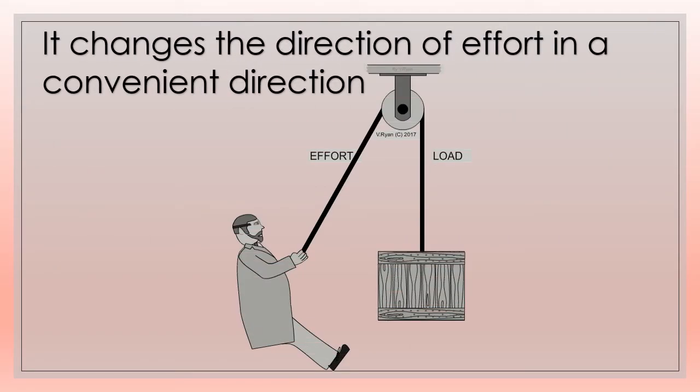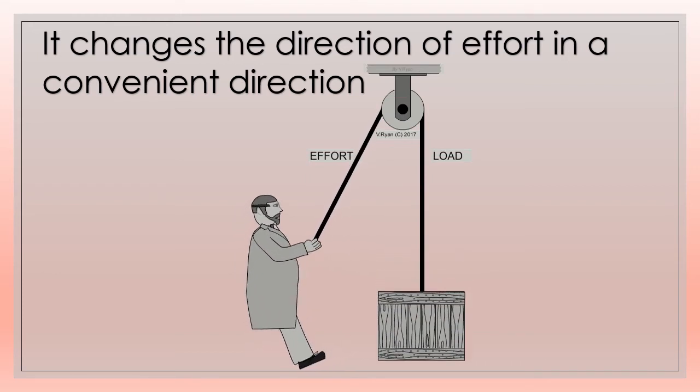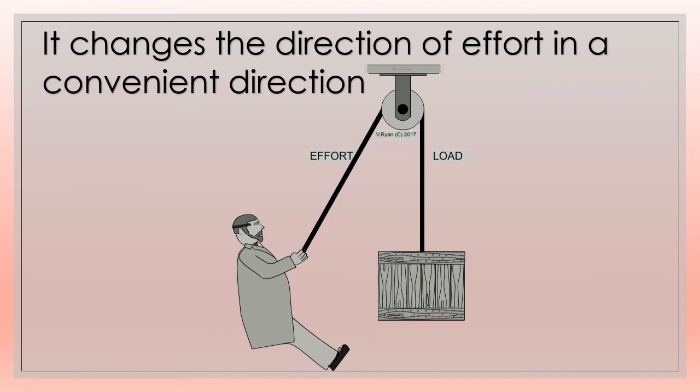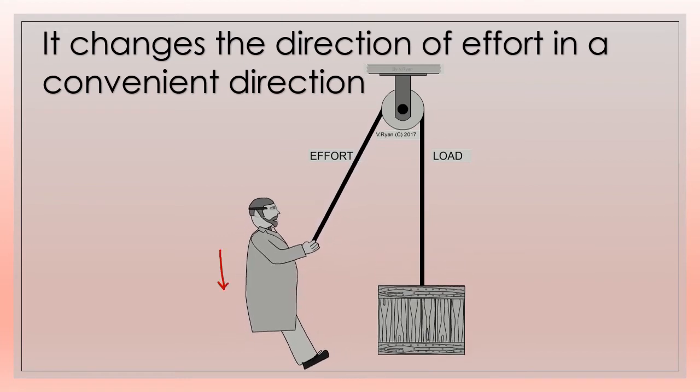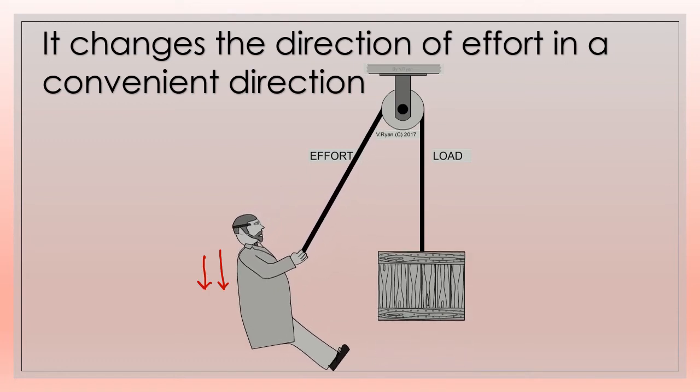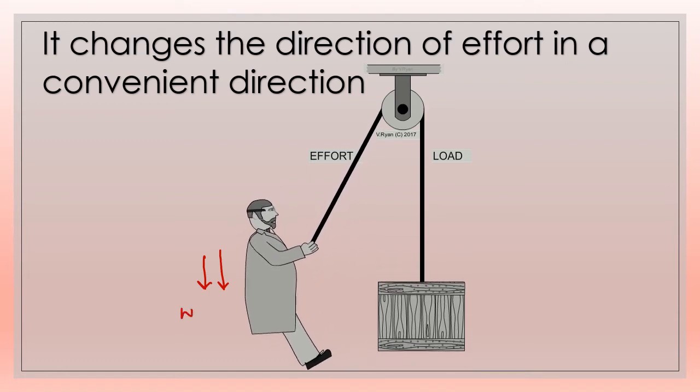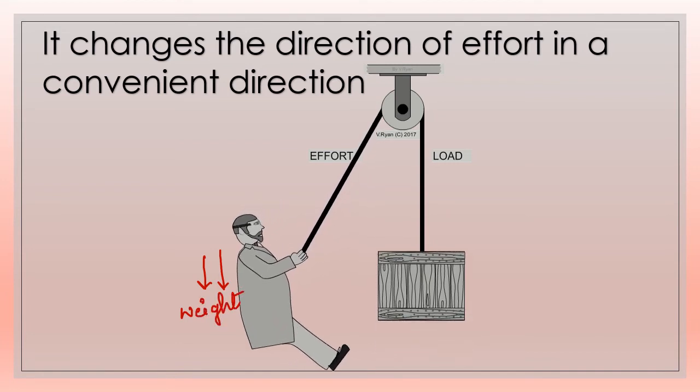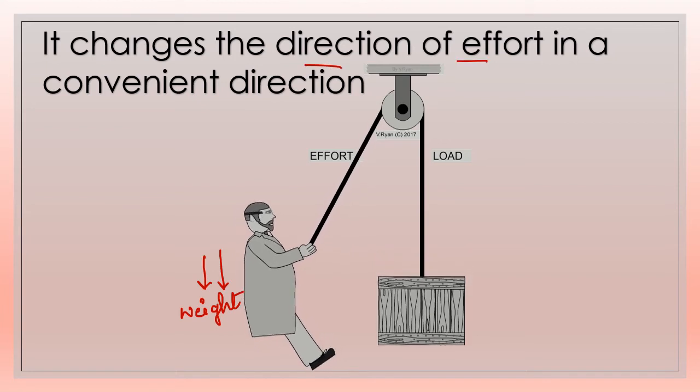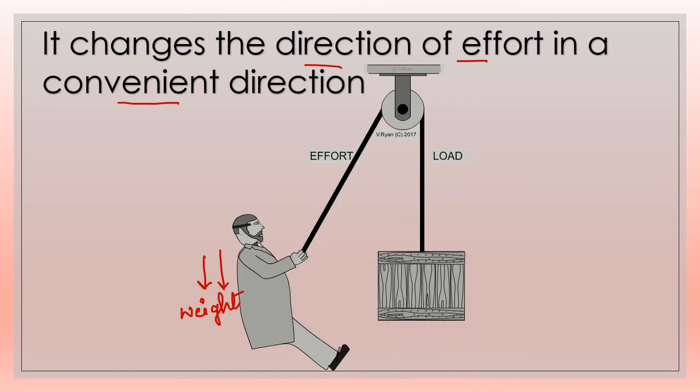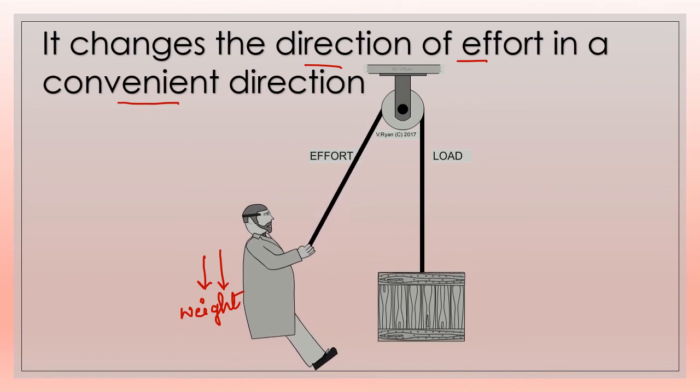When we have to draw water from a well or if we have to lift up a heavy load, we use a pulley as it helps us to apply effort in the downward direction. While pulling anything downward, we can also apply our own body weight. Thus, a machine changes the direction of effort in a direction which is convenient to us, because it is easy to pull anything downward instead of pulling it up.